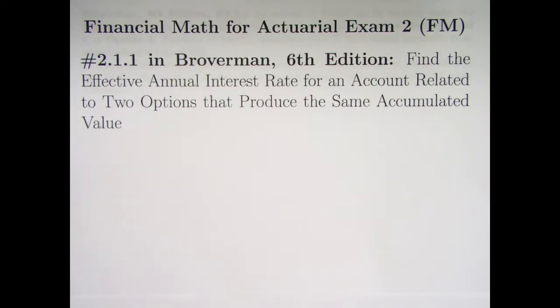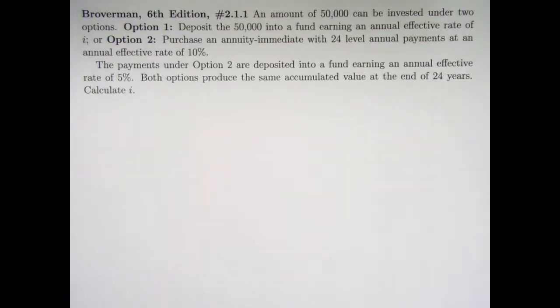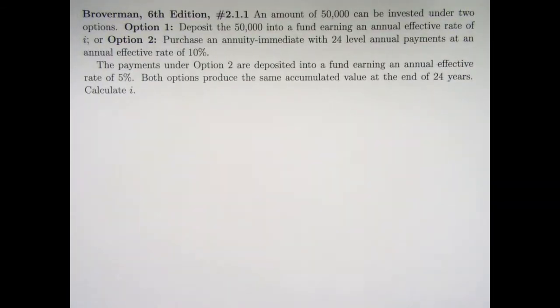You want to find the effective annual interest rate, I, for an account related to two options that produce the same accumulated value. Here's the problem statement. It is kind of long. There is a lot going on.